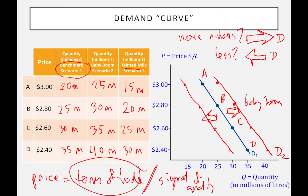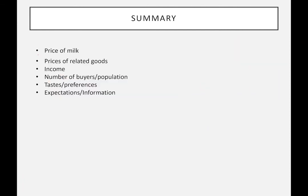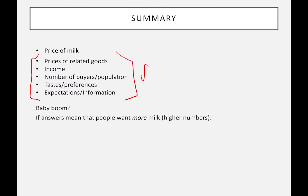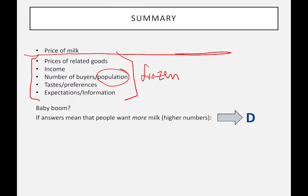Bear in mind: when the price falls you move down the curve — this is the concept of quantity demanded versus demand. To summarize: when I kept all the other factors constant and only changed the price, that draws the curve. When I changed the population — a factor previously frozen — I had to conduct a whole new experiment, and the demand curve shifted to the right. So draw a sharp line between the two: changing the price of milk means movement along the same curve; changing something else means a new curve.